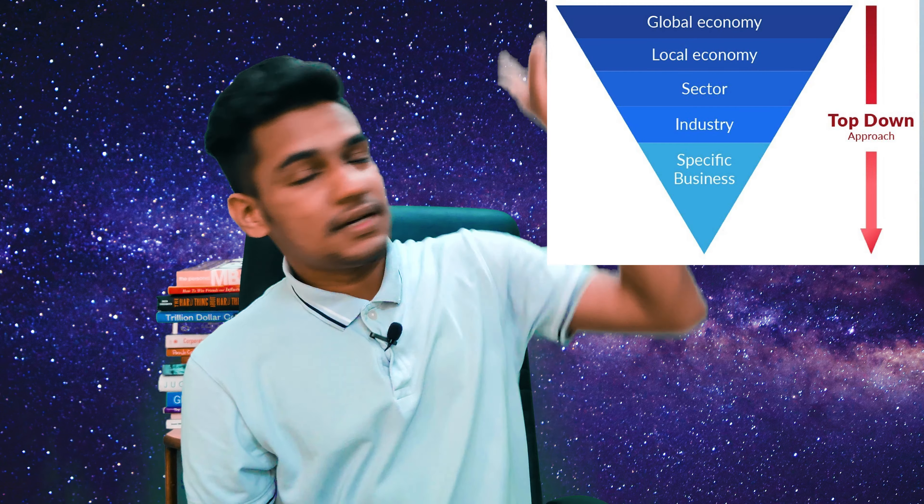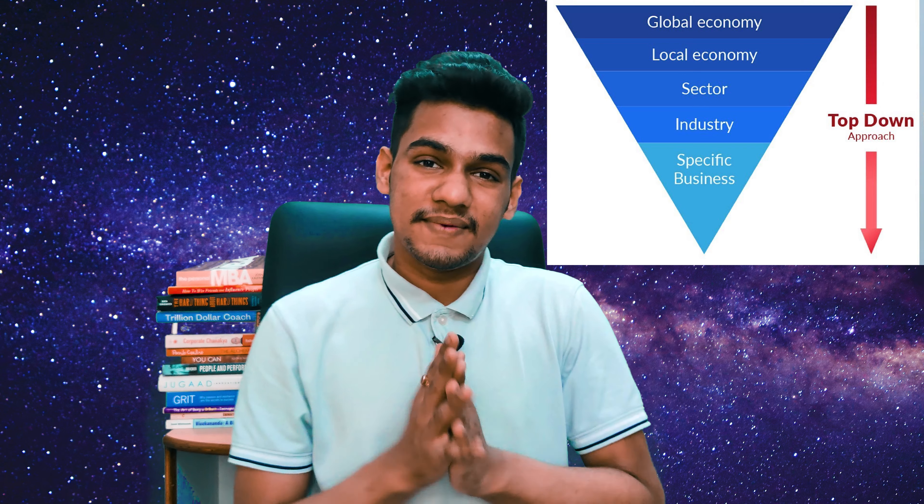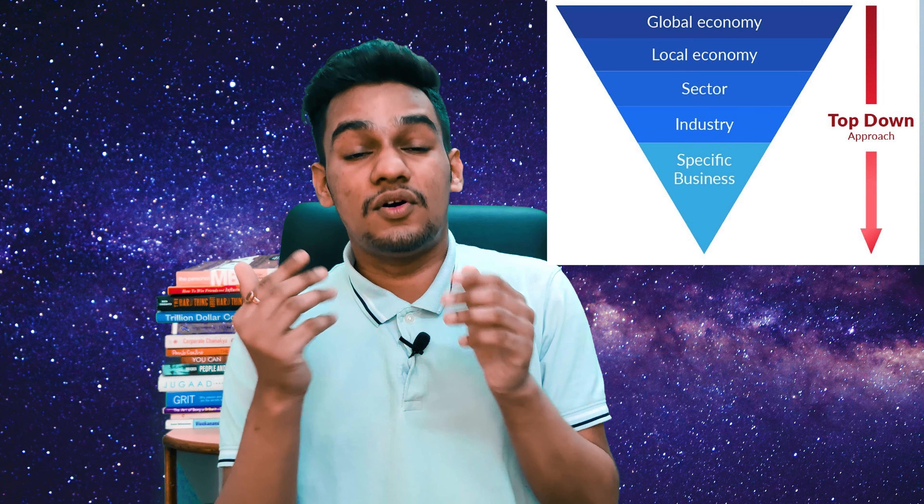The first thing in the top-down approach is deciding which country or economy we want to invest in. For example, the US is a developed country with limited growth opportunity, whereas India is a developing country with significant growth opportunities, so India would be the preferred choice in this case.